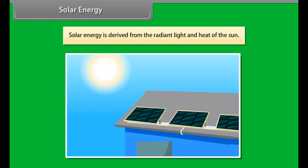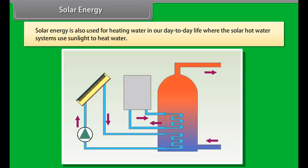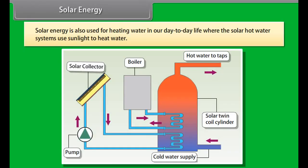At a substation, this medium voltage electric current is increased in voltage with a transformer for connecting to the high voltage electric power transmission system.